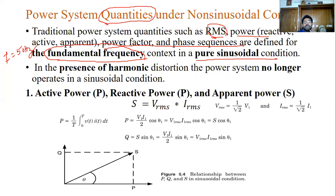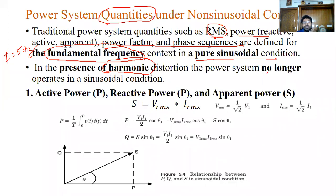Under pure sinusoidal conditions, we assume there are some RMS voltage, active power, reactive power, apparent power, power factor, phase sequences, and fundamental frequency in the system. All these quantities are defined under a constant fundamental frequency in pure sinusoidal waveforms. But suppose there are harmonics in the system — when harmonics are produced, we can no longer assume sinusoidal conditions.